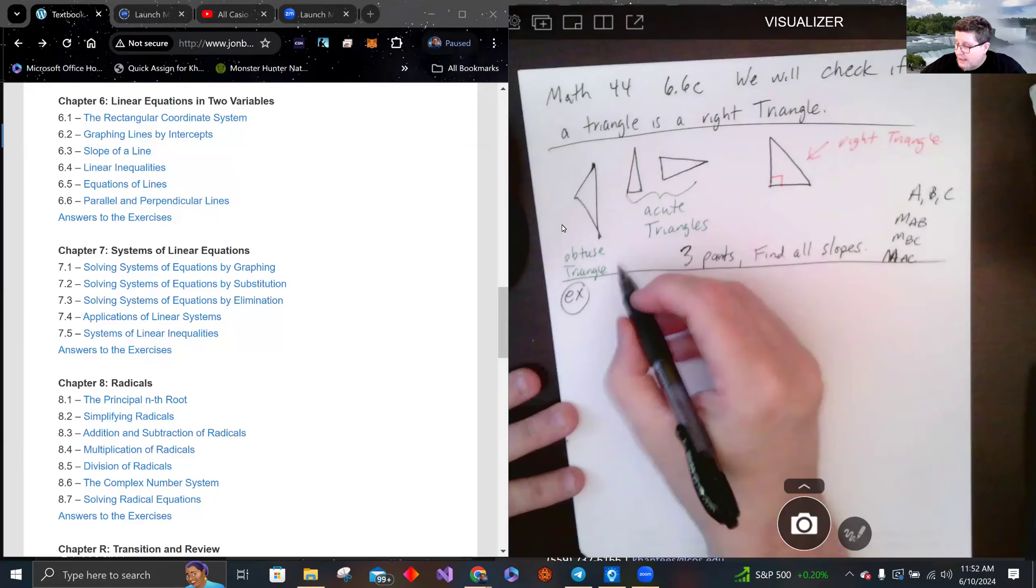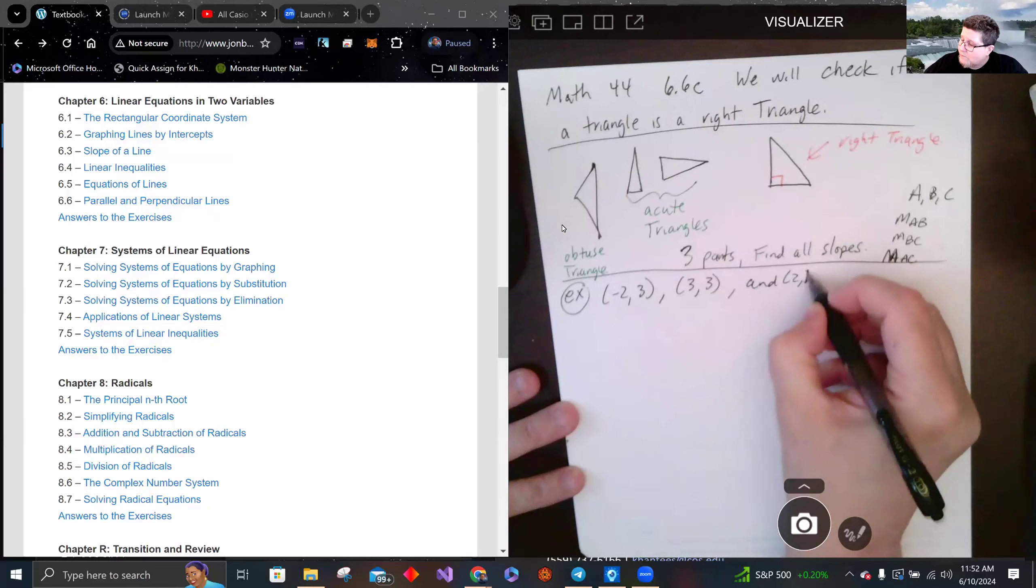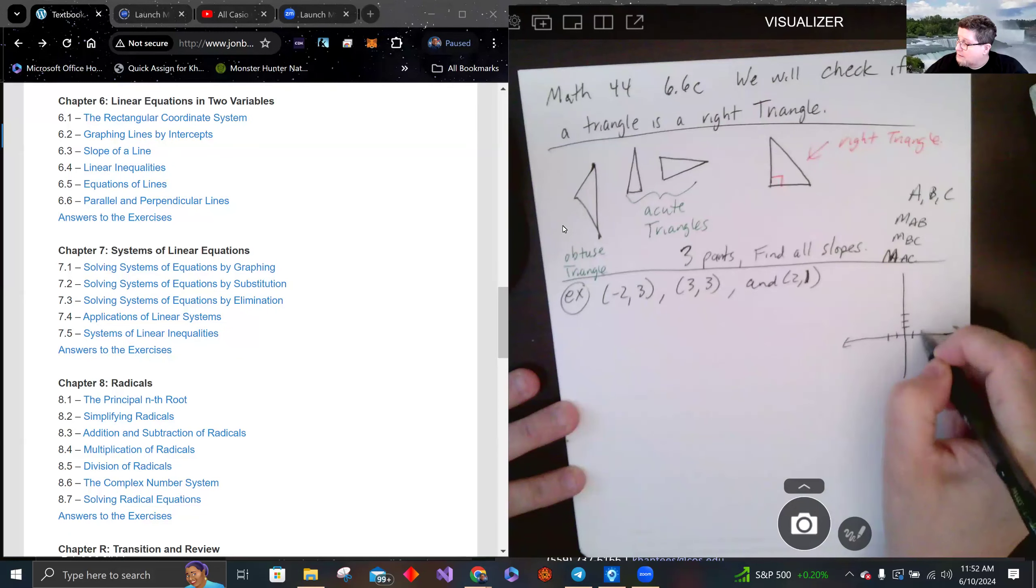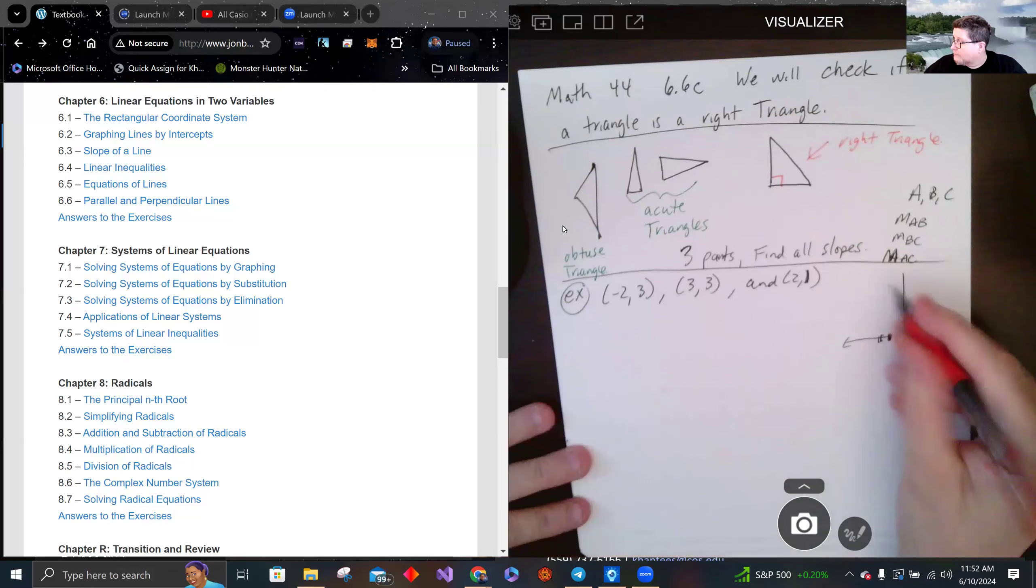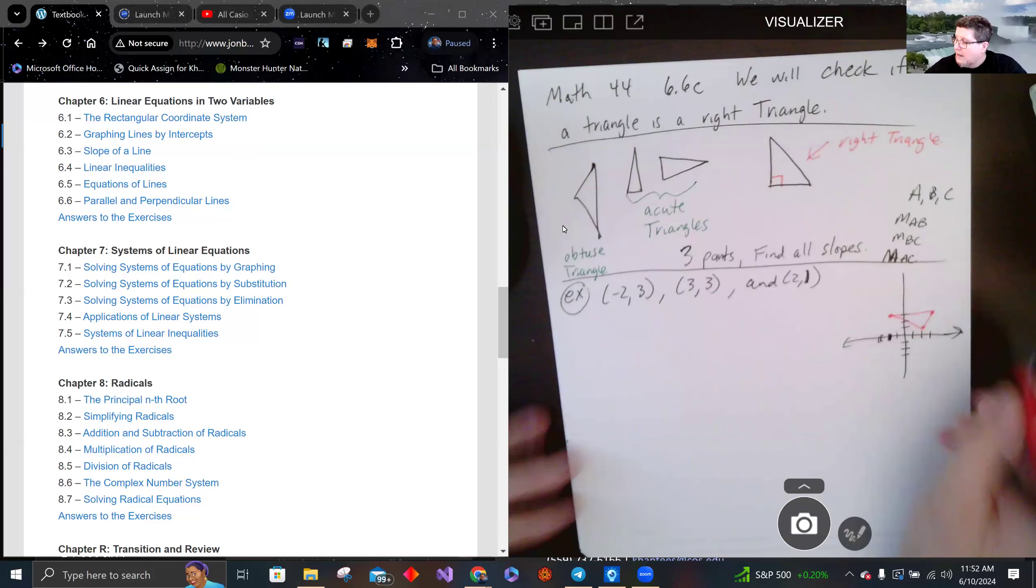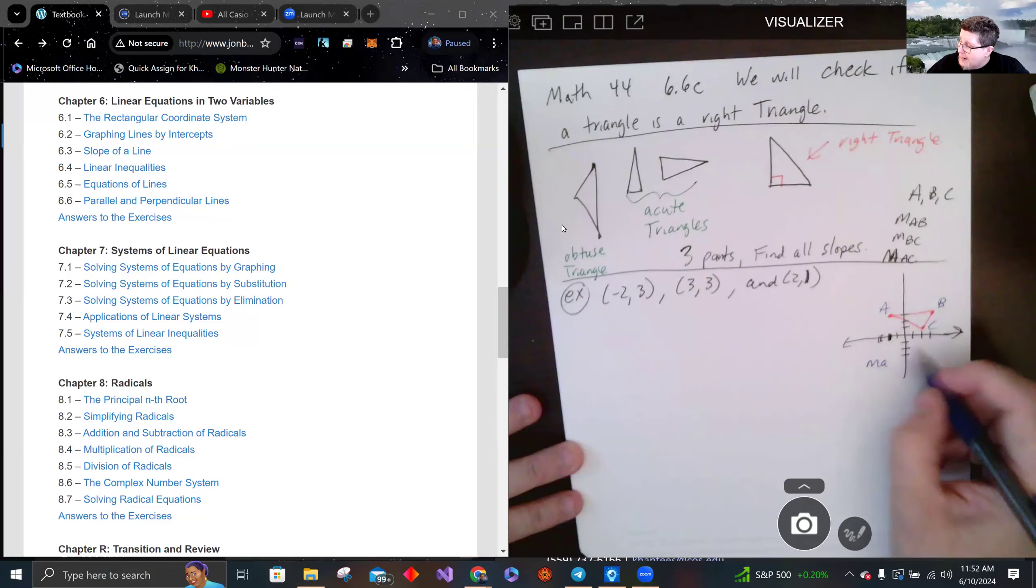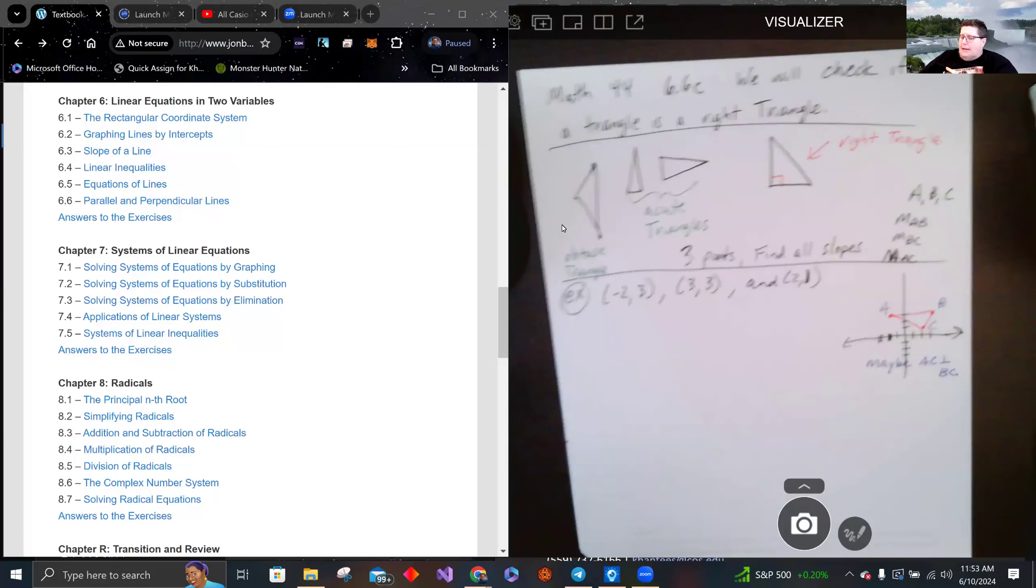First example: (-2,3), (3,3), and (2,1). You can always do a sketch to see what it looks like to get some intuition. Now if any of them, it looks like maybe, if I call this A, B, and C, maybe AC is perpendicular to BC. AB clearly is not. It's just too far off, but we're going to find all combinations.